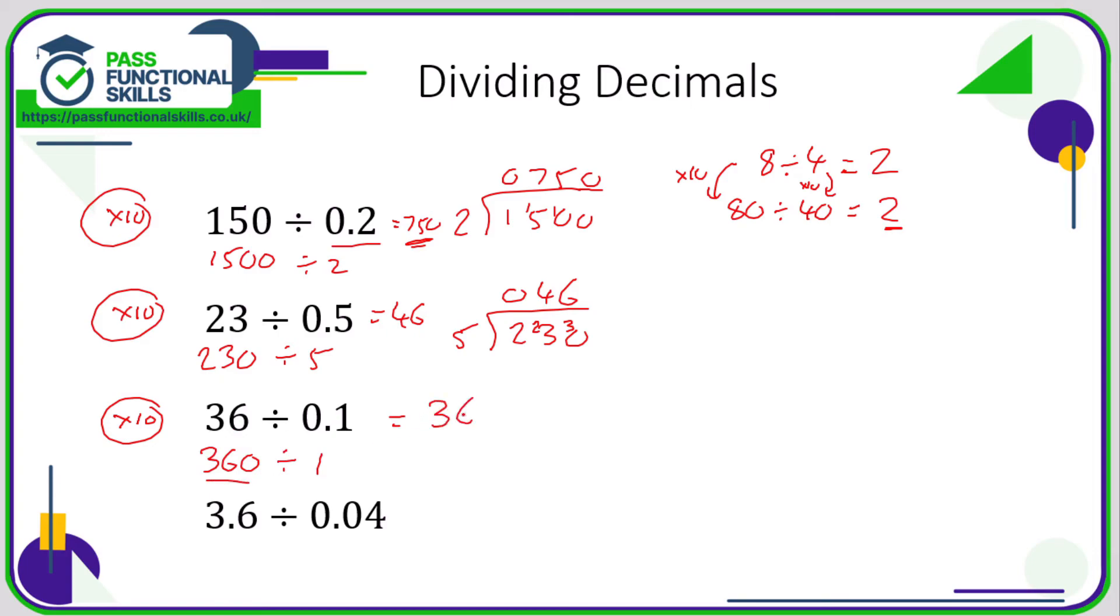In this next example, if I multiply both numbers by 10, I'm going to get 36 divided by 0.4. So I've still got a decimal, so I'm going to multiply by 10 again. So that's going to be 360 divided by 4. And 4s into 360: 4s into 3, 0 carry the 3. 4s into 36 is 9. 4s into 0 is 0. So the answer is 90.